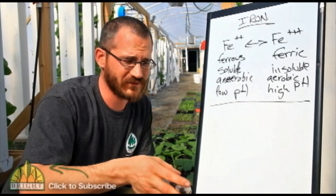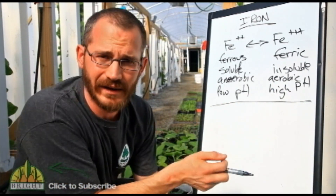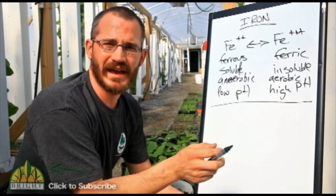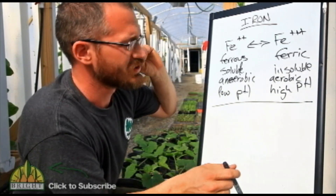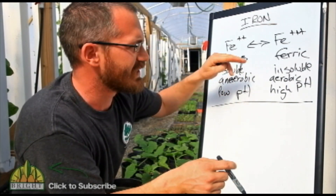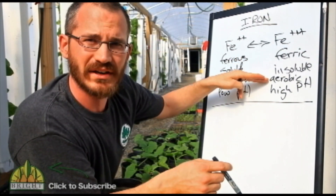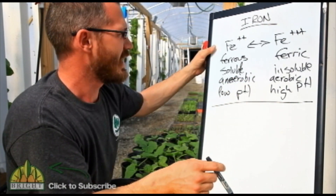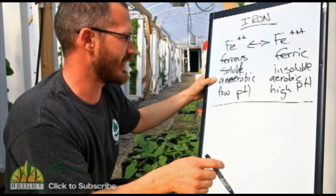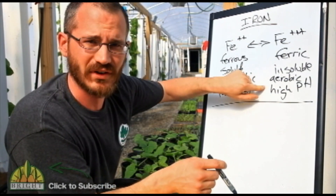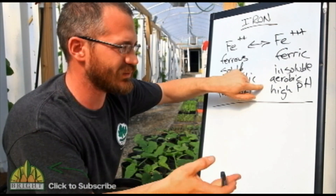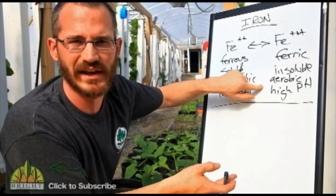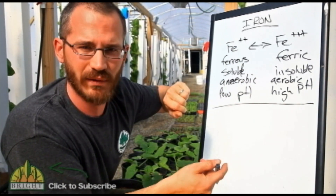There are all sorts of natural compounds that chelate iron, but we've also got some artificial ones. These artificial chelating agents are really handy because they allow us to make iron available in aerobic conditions and in conditions where pH can sometimes be fairly high — conditions where iron almost always becomes ferric and insoluble. With these chelating agents, we can make iron available to our plants.